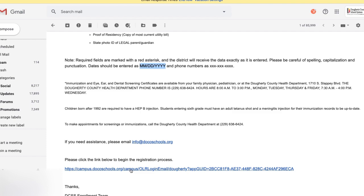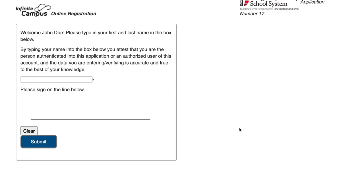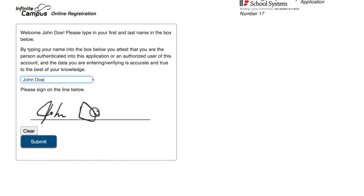To proceed with your registration, click the link below. Now you're ready to start your application. On this first screen, simply type your email in, verifying that the information you're going to enter is true and accurate. Then use your mouse or your finger, if you're on your smartphone, to sign your name. Click submit.